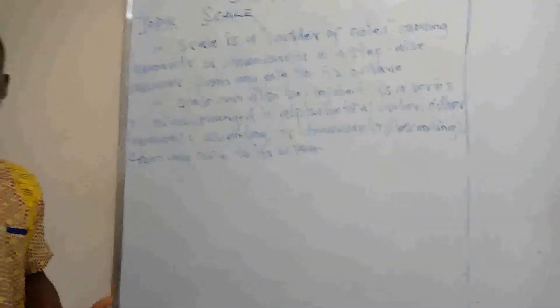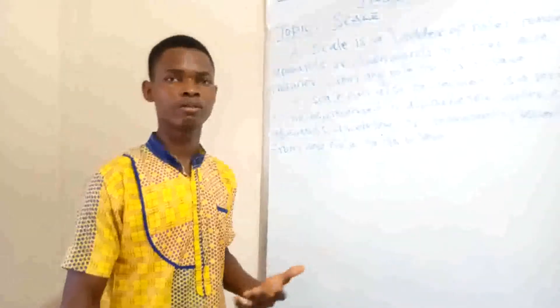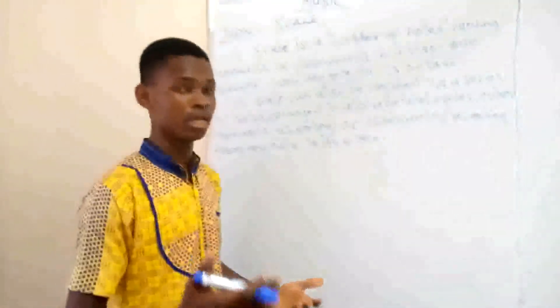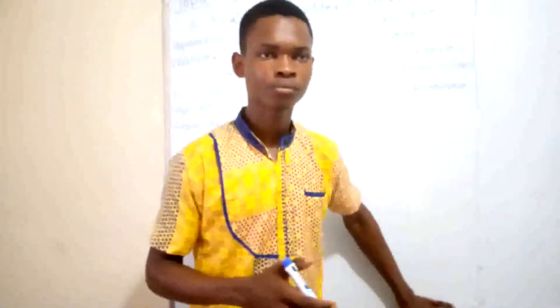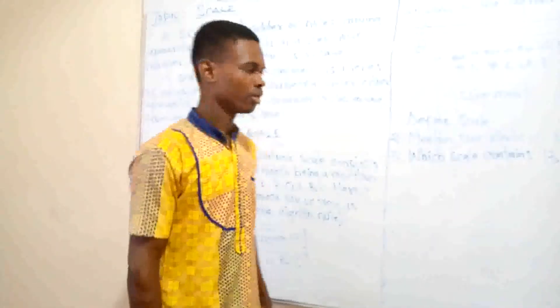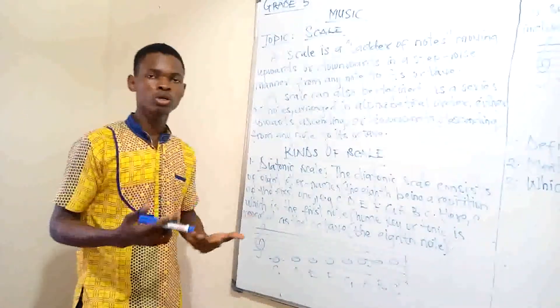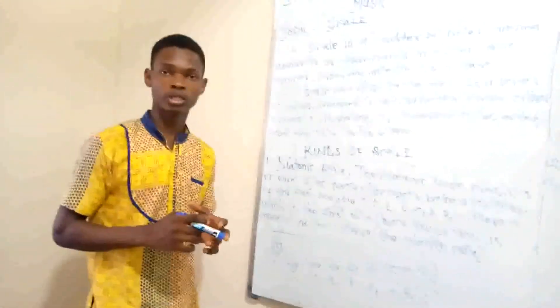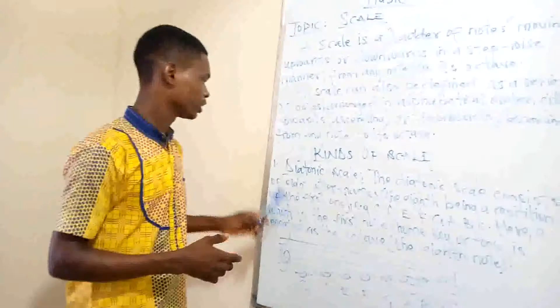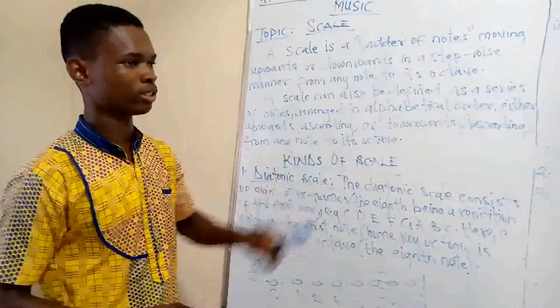At this point we'll talk about the kinds of scales we have. We have the diatonic scale and the chromatic scale. For this level we'll stop at the chromatic scale, so we're looking at two kinds of scales: the diatonic scale and the chromatic scale.